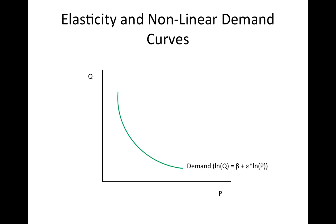Often, a straight line is not the best representation of real-world demand. Sometimes a curve better captures the real-world relationship between price and quantity. In a curve like the one pictured in this figure, the elasticity of demand is constant across the entire curve. Typically, the formula for a curve like this would be the natural log of quantity equals a constant plus epsilon times the natural log of price. In this equation, the coefficient of the natural log of price is the price elasticity of demand. You may find that you apply this information in your econometrics course sometime in the near future.